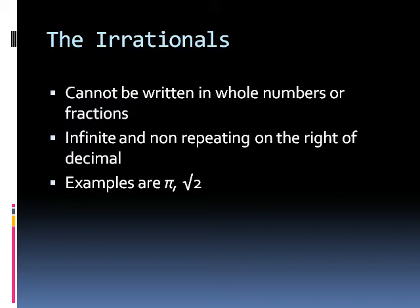So what are irrationals? Well, irrationals are numbers where it cannot be written in whole numbers or fractions. And it also has an infinite and non-repeating on the right of decimal. The famous example is pi, which is 3.14. That is the most well-known digits. But then there are an infinite amount of digits that don't repeat nor have a pattern of itself. So pi is an irrational number.